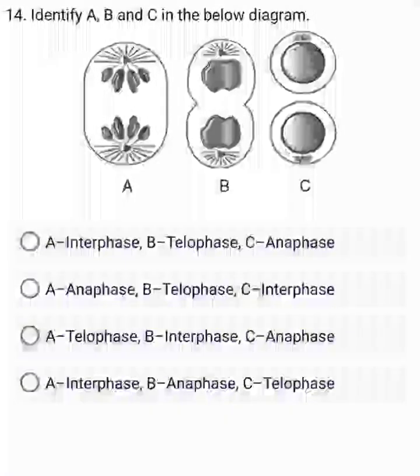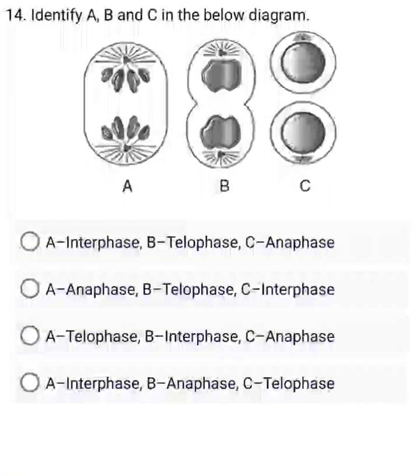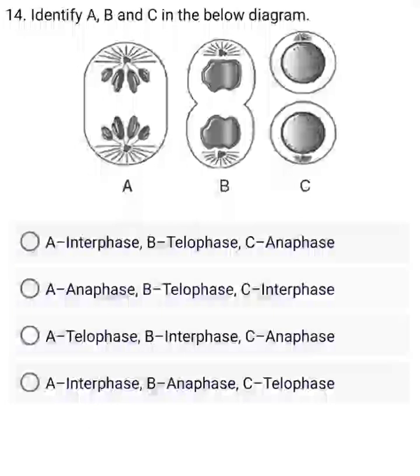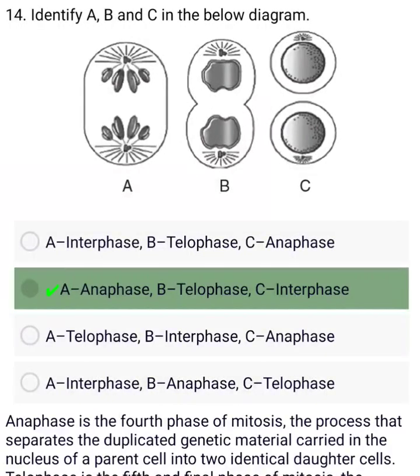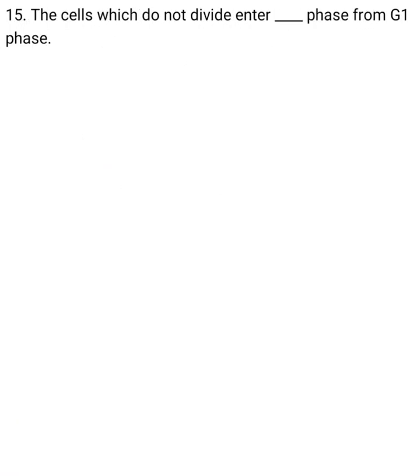Identify A, B, and C in the below diagram. A. A = interphase, B = telophase, C = anaphase. B. A = anaphase, B = telophase.